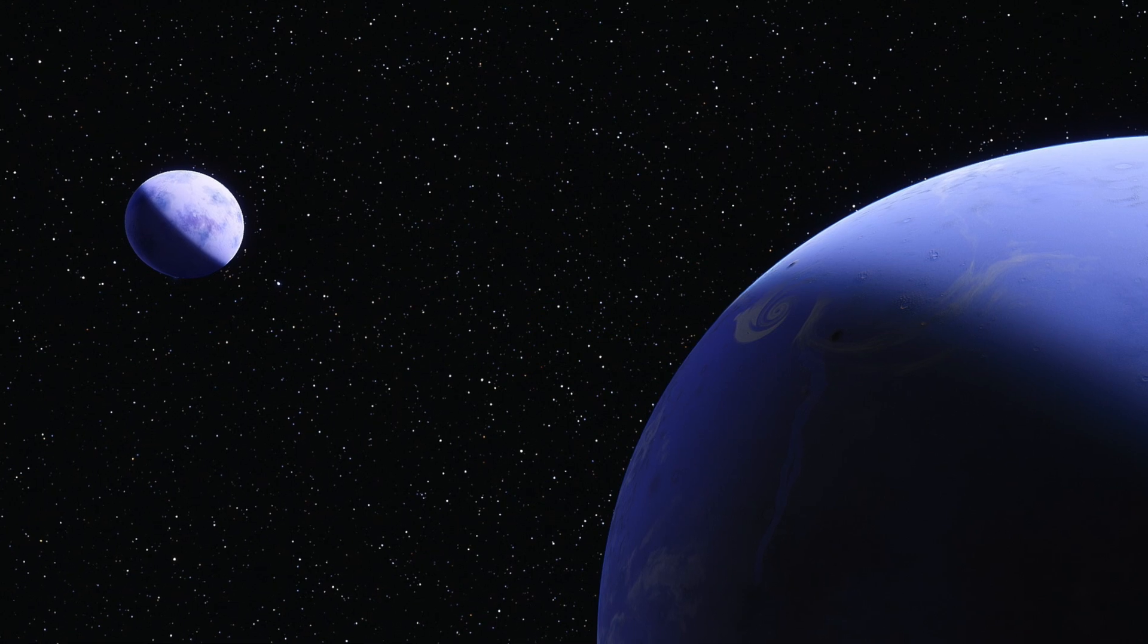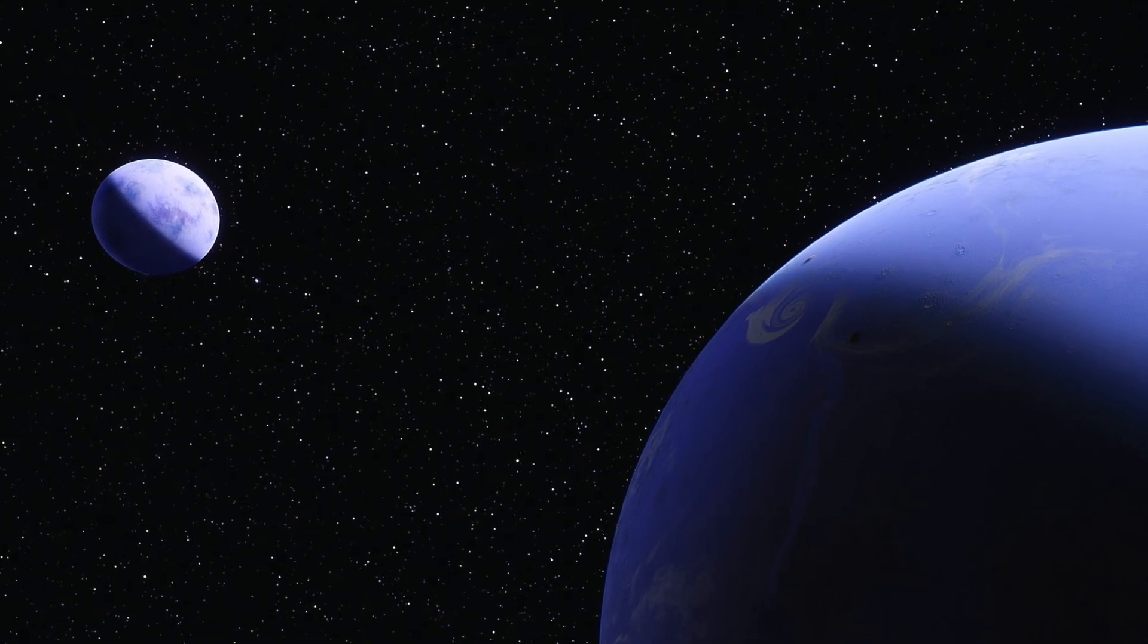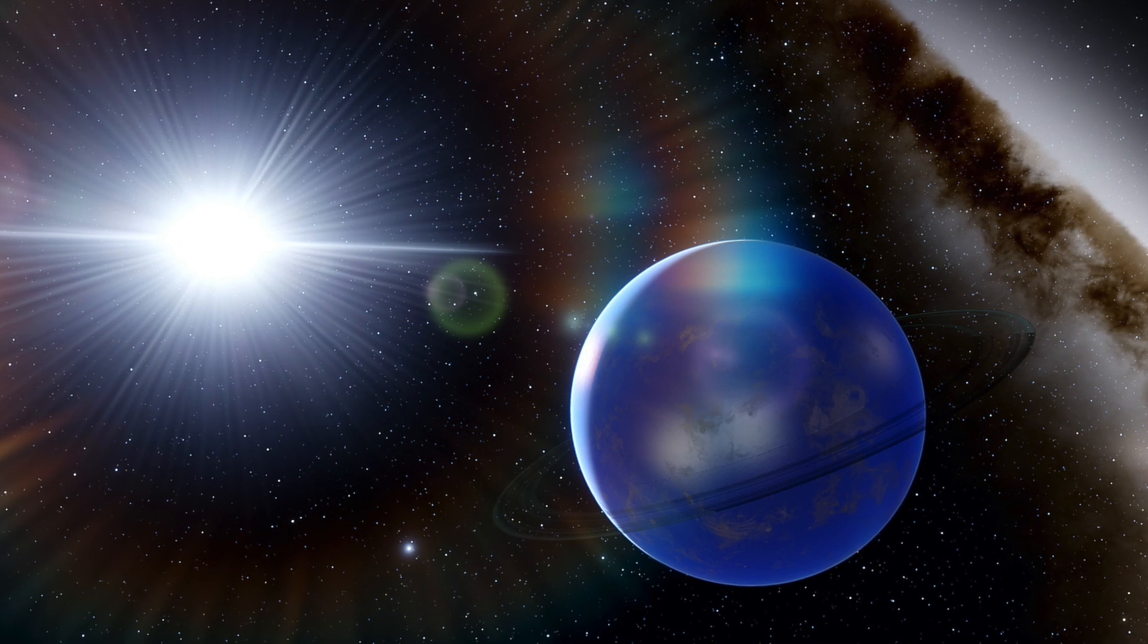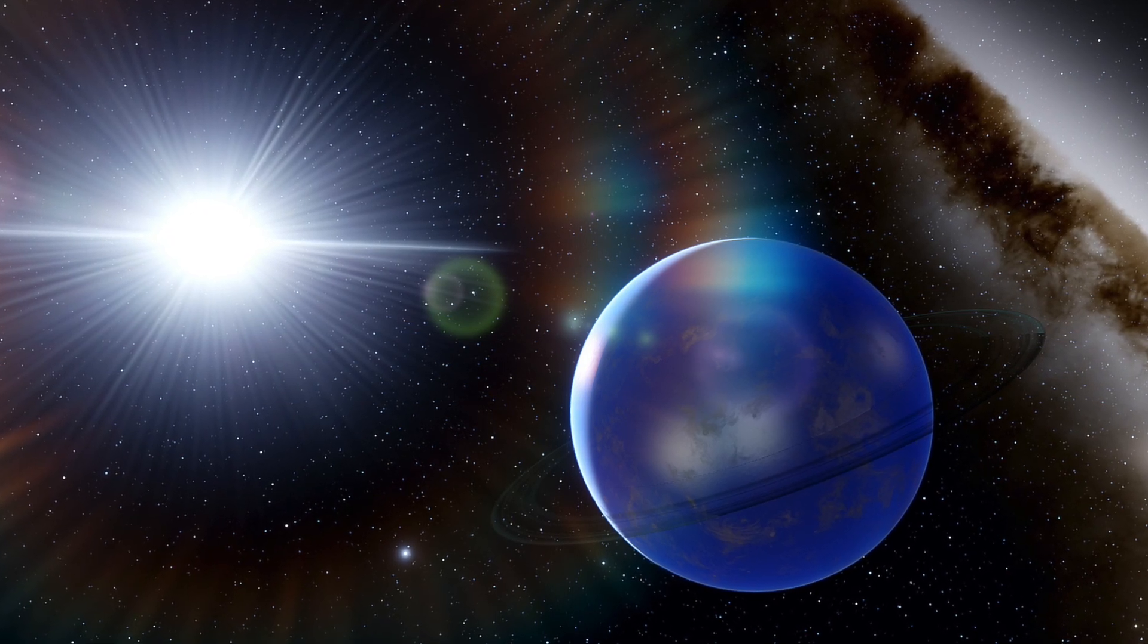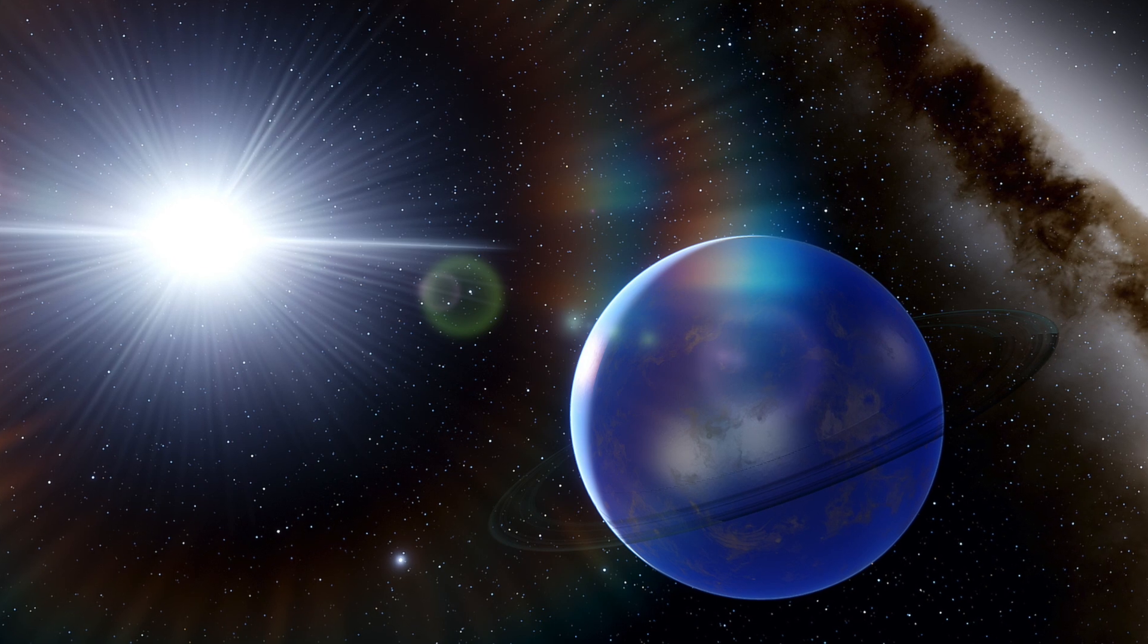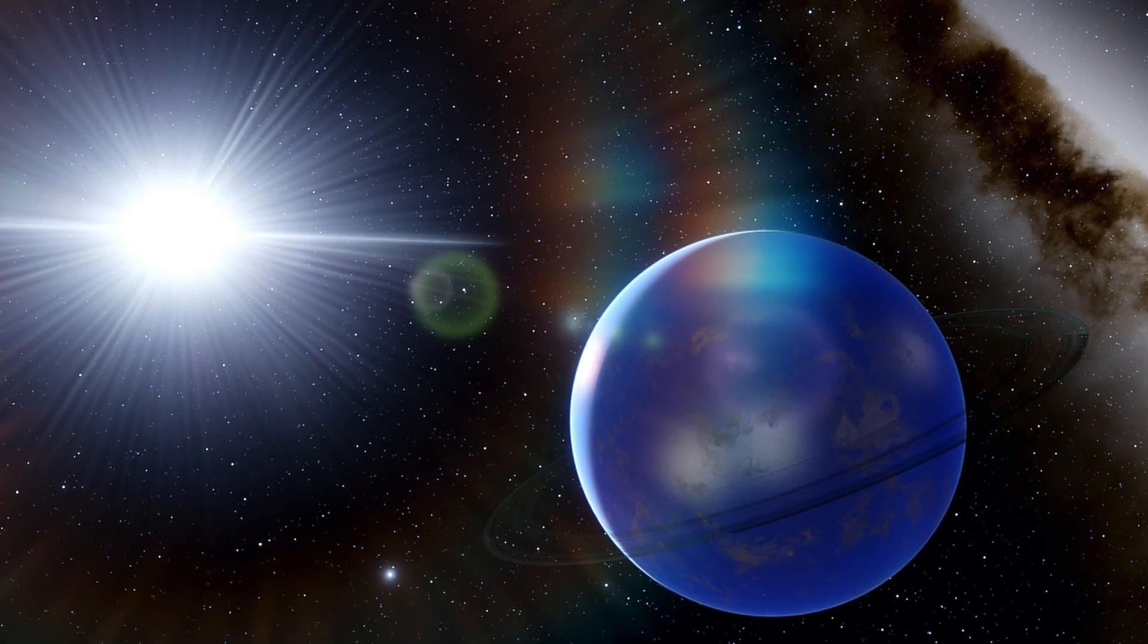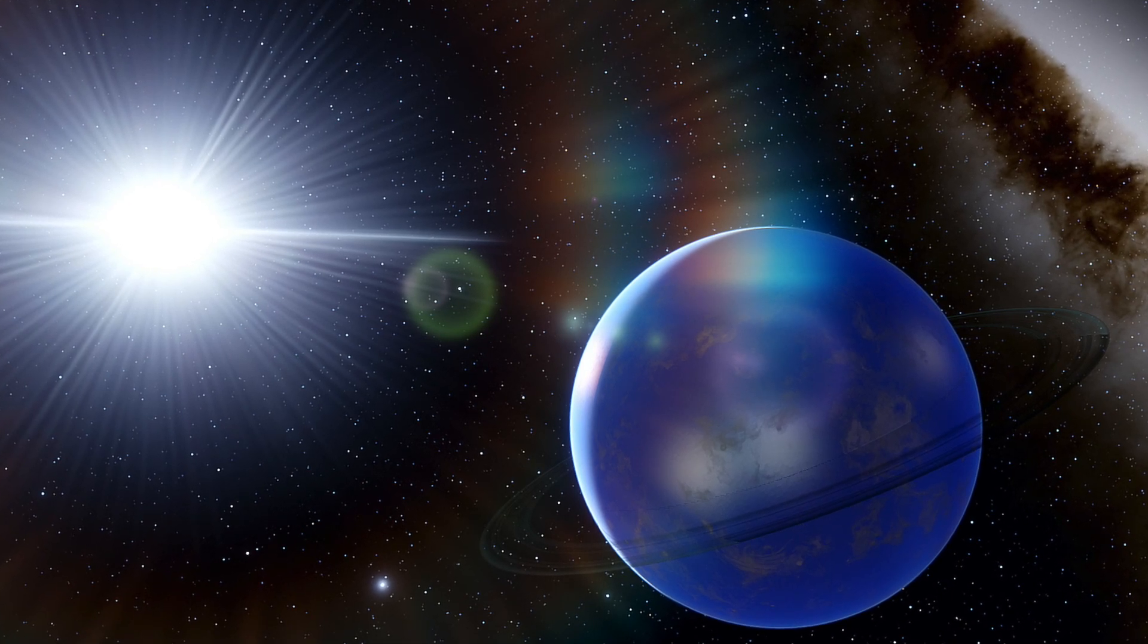The Earth-sized planet orbits within the habitable Goldilocks zone of its nearby star. This ideal location means that it could be possible that conditions would allow for liquid water on the planet's surface. The planet, named TOI-700D, was confirmed using NASA's Spitzer Space Telescope.